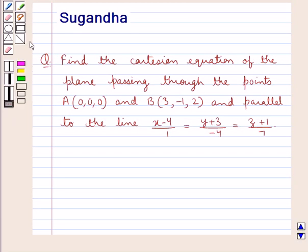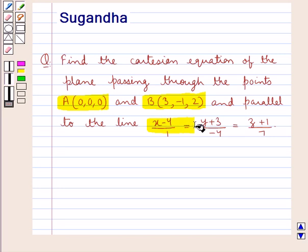Hello and welcome to the session. In this session we discuss the following question: find the Cartesian equation of the plane passing through the points A with coordinates (0, 0, 0) and B with coordinates (3, −1, 2), and parallel to the line (x − 4)/1 = (y + 3)/(−4) = (z + 1)/7.